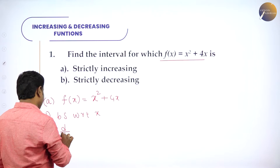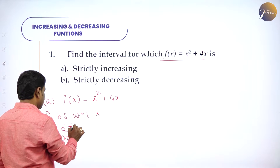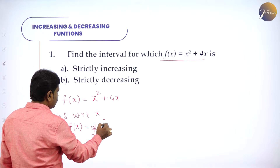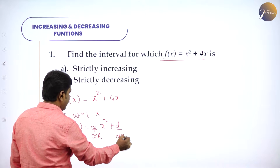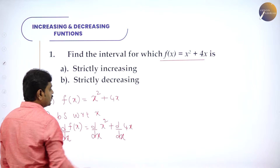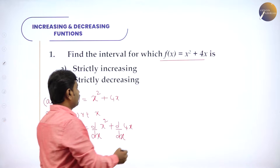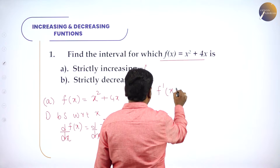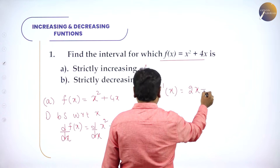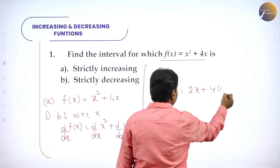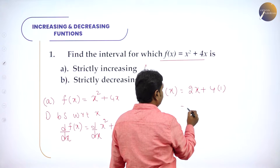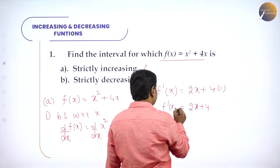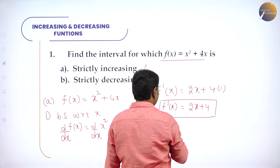d/dx of f(x) equals d/dx of x² plus d/dx of 4x. d/dx of f(x) is f'(x), and d/dx of x² is 2x, d/dx of 4x is 4 — since 4 is constant and derivative of x is 1. So f'(x) = 2x + 4. Call this equation one.